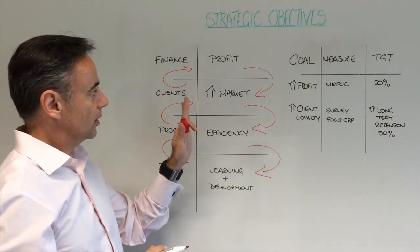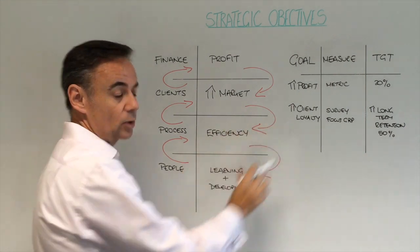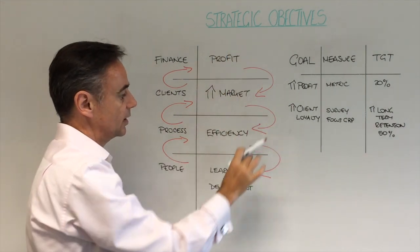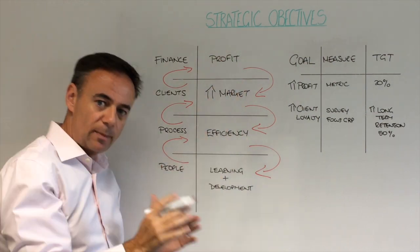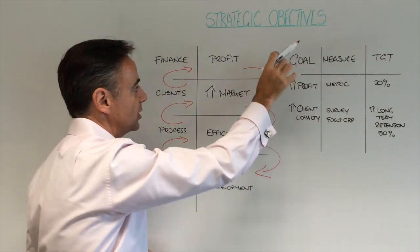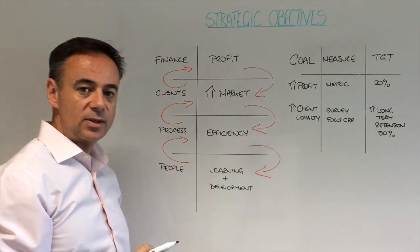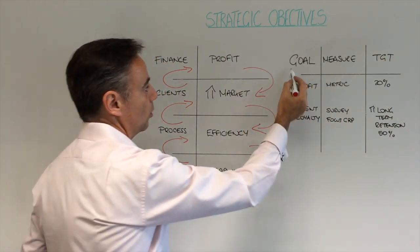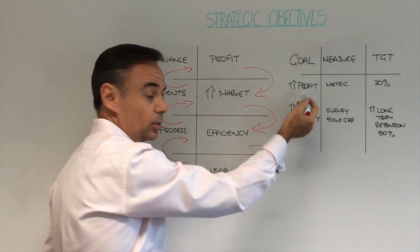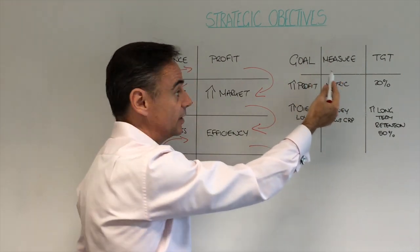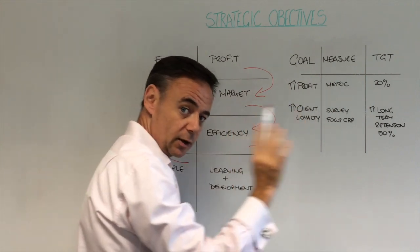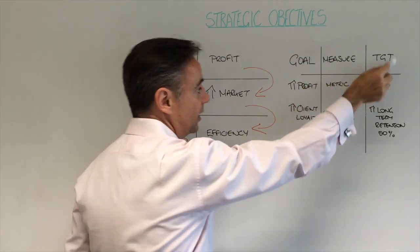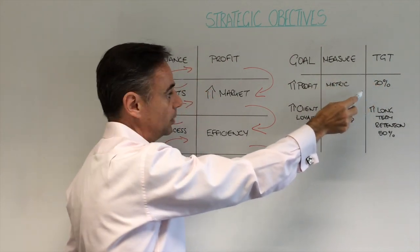What Kaplan and Norton then did was bring in what they called a scorecard approach. So if you're looking at individual goals — remember, goals are very specific — you can build that into this process by building a simple scorecard to look at what the goals are, for example increasing profitability, what the measure is that you're going to use to track it on an ongoing basis, and finally the target itself of what you want that to be.